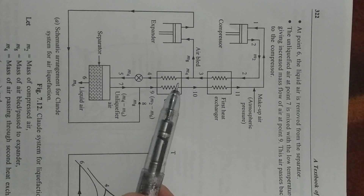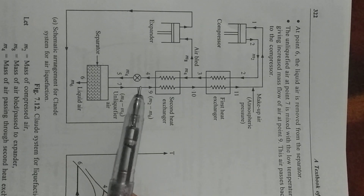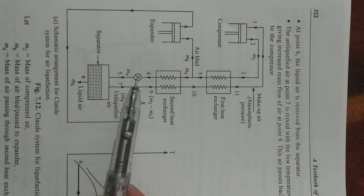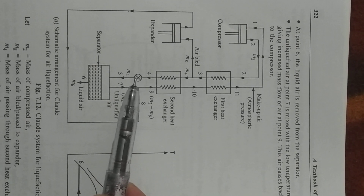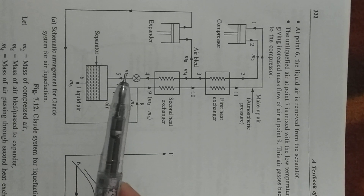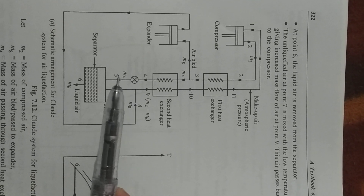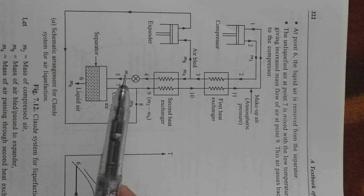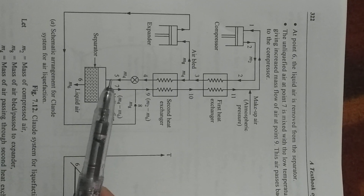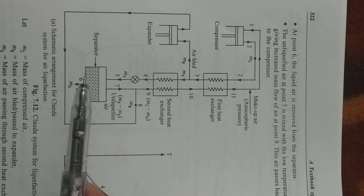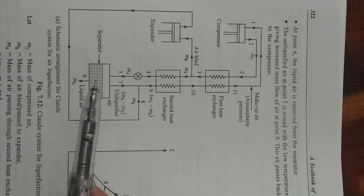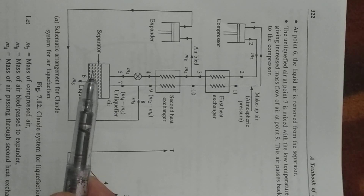From the second heat exchanger, the temperature again reduces under high pressure, and then passing through the expansion valve, the temperature reduces further and the pressure drops to atmospheric. After that, the air changes into liquefied air and is separated with the help of a separator.